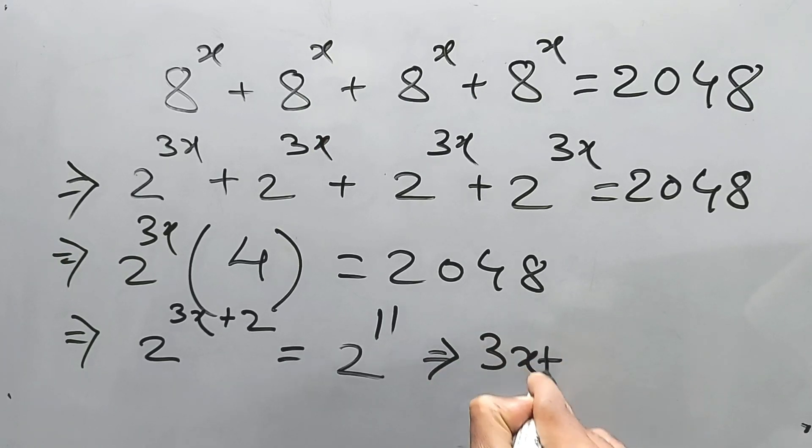Therefore 3x is equal to... this 2 will go this side and it will be minus 2, so 3x is equal to 9.